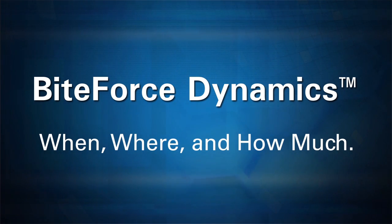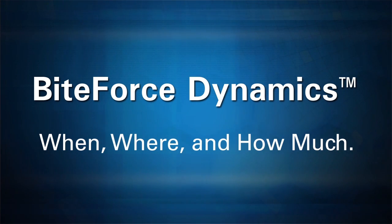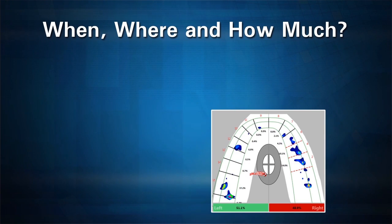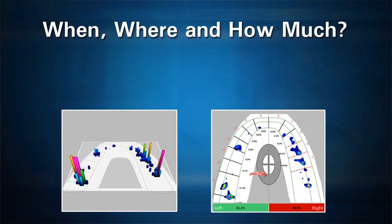When you rely on 'how does that feel' to qualify an occlusal adjustment, you give up control of the treatment process. The T-Scan puts your articulating paper marks into context by showing the force of marks you need to care about, to help reduce treatment time and improve patient care.